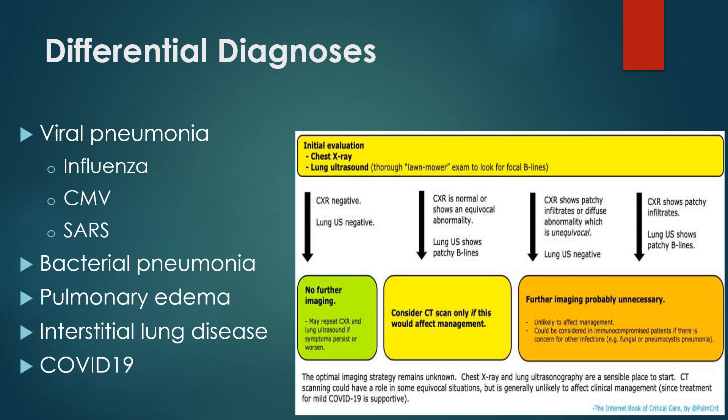The conundrum is that there are many other diagnoses to rule out in patients presenting like this: viral pneumonia, influenza, CMV, SARS, bacterial pneumonia, pulmonary edema, interstitial lung disease, and COVID-19. The initial evaluation requires chest X-ray, lung ultrasound, and possibly CT if it would affect management — or even no imaging at all depending on what you find. It's a difficult pathway, and a lot of the decision-making comes down to what you're comfortable with and what you find on ultrasound.